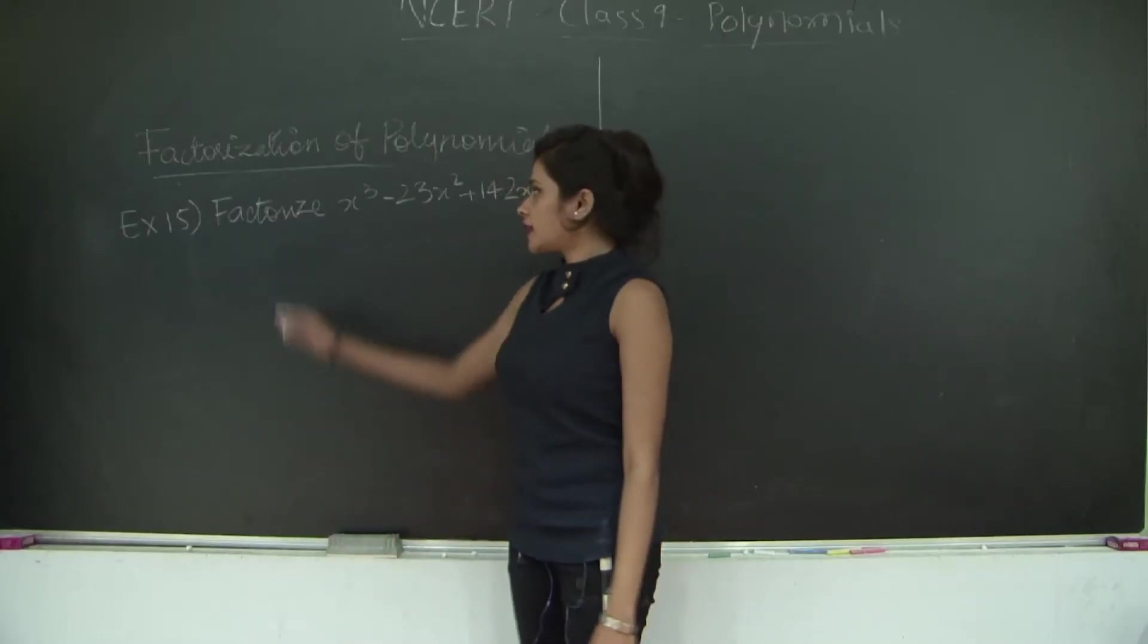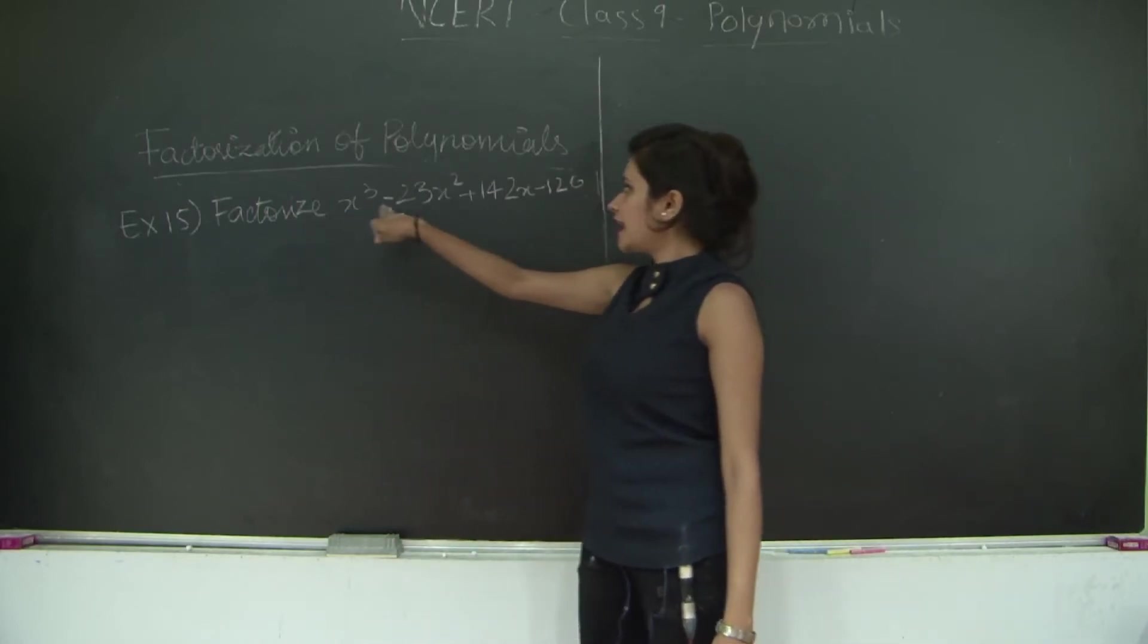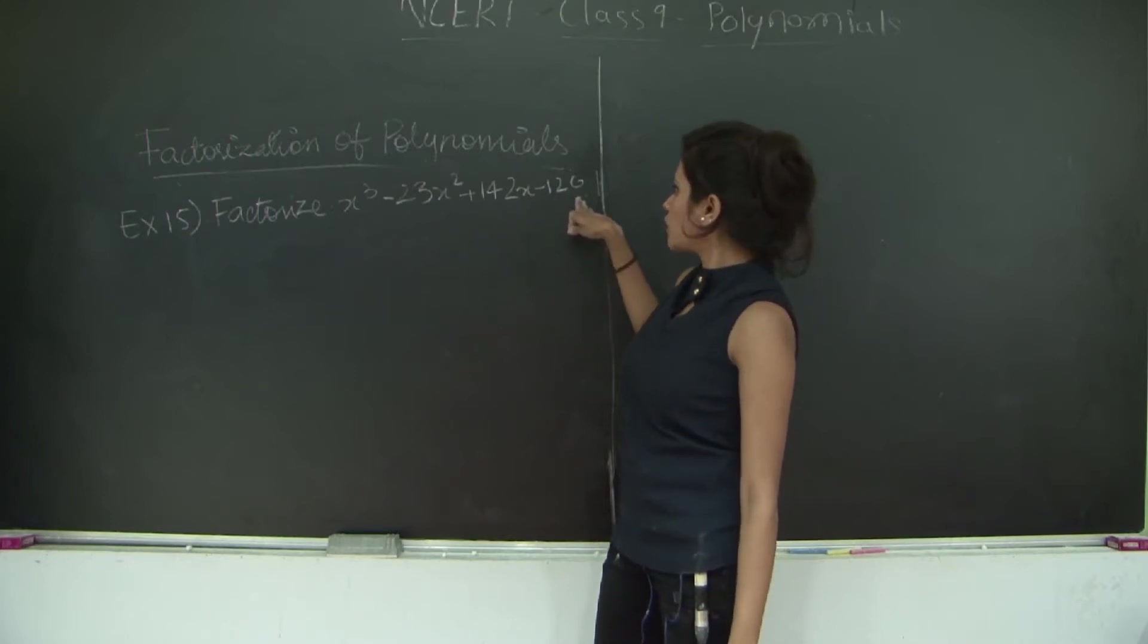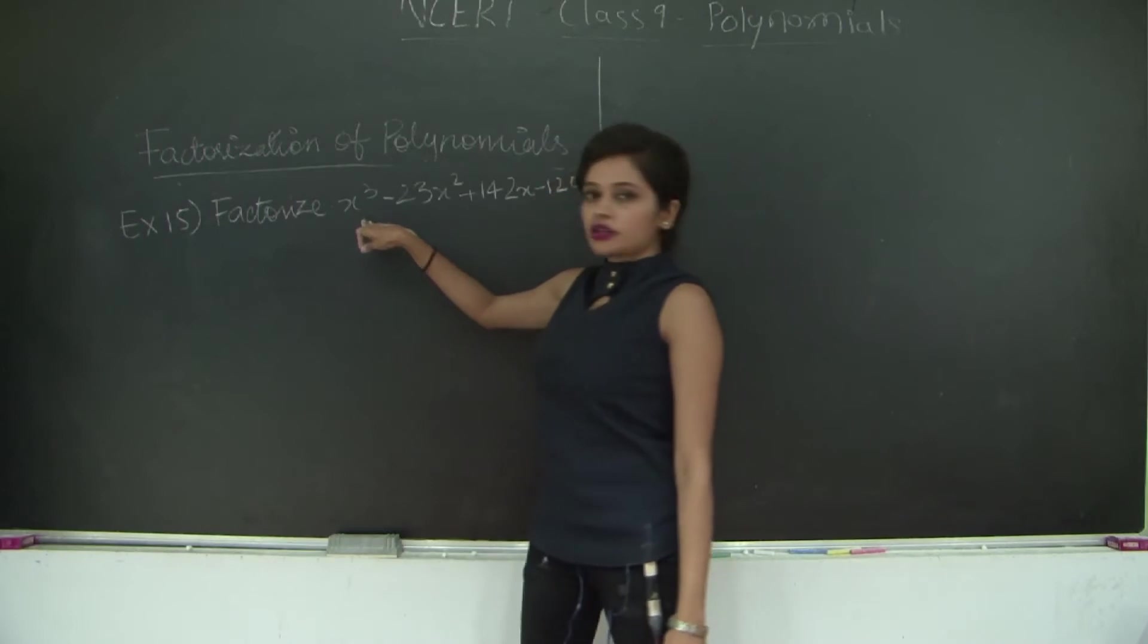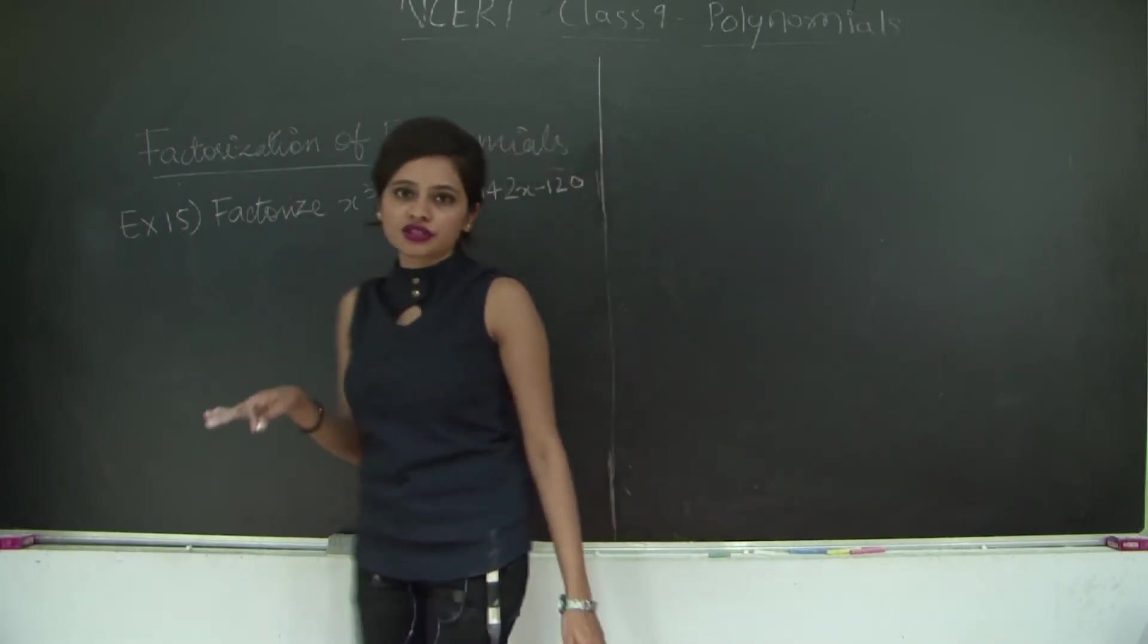Hello students. Let's solve the last solved example for factorization of polynomials. We need to factorize x³ - 23x² + 142x - 120. This is a cubic polynomial, therefore it will have three roots.